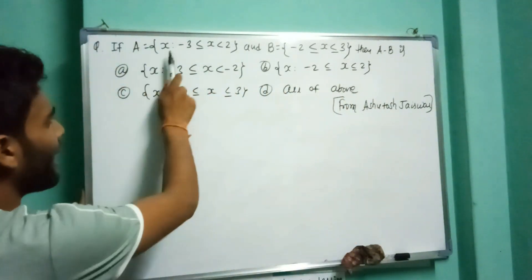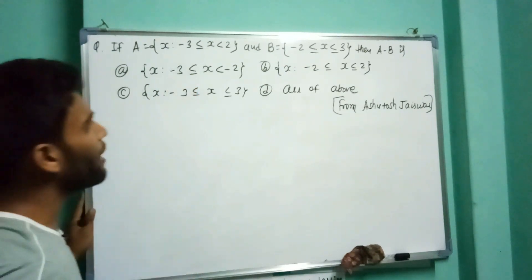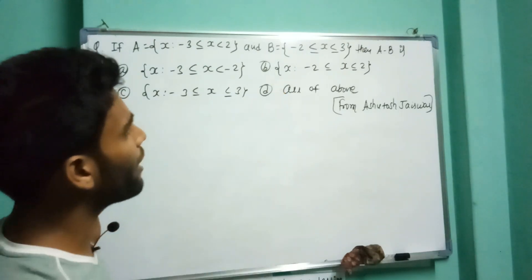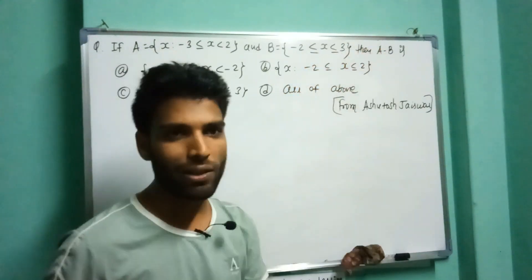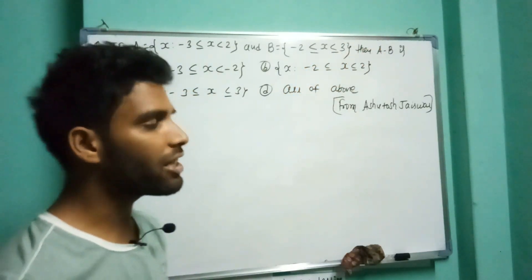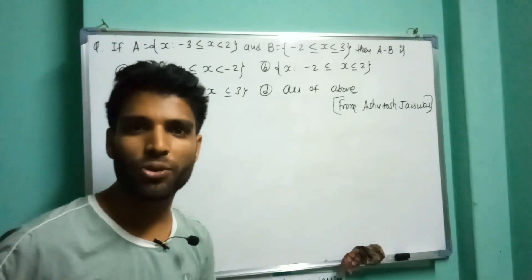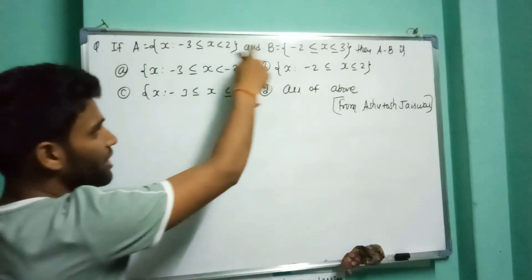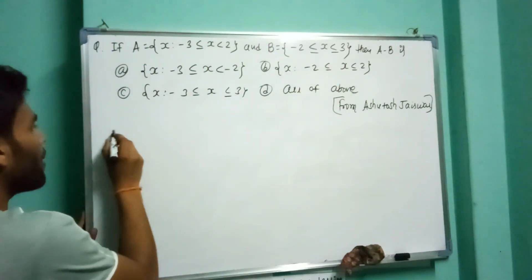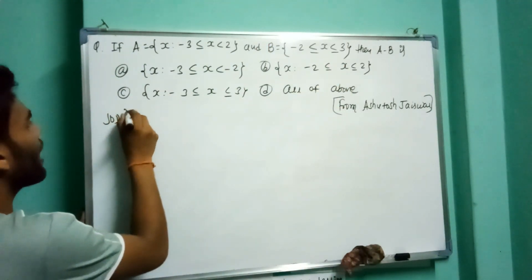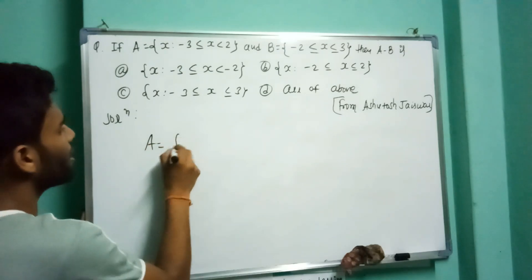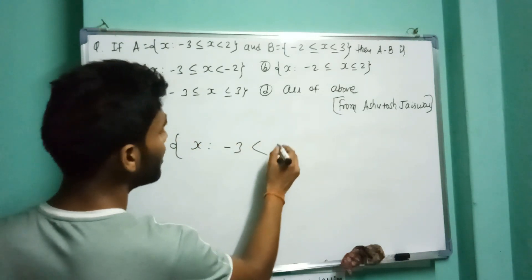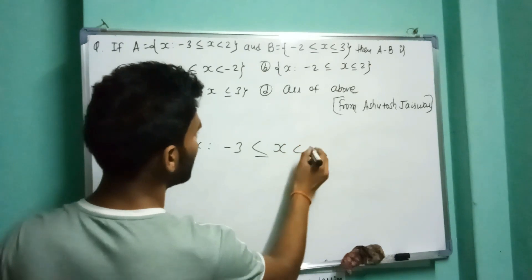Second question: if A equals the set such that minus 3 is less than or equal to x which is less than 2, and B equals the set minus 2 less than or equal to x less than or equal to 3, then find A minus B. A minus B means the set difference of A and B. A is: minus 3 less than or equal to x less than 2.